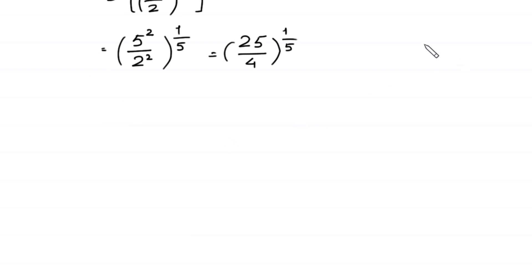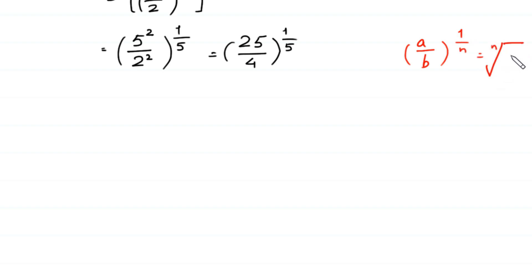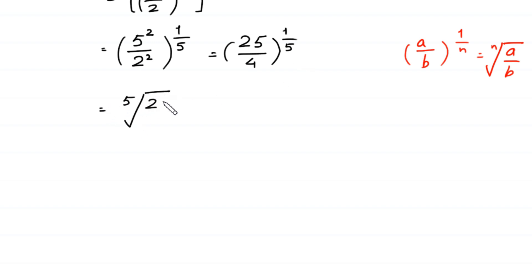According to this property, a over b, whole to the power 1 over n is equal to the nth root of a over b. We can write 25 over 4, whole to the power 1 over 5, as the 5th root of 25 over 4.